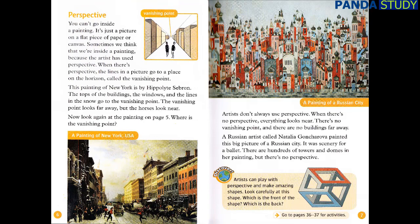Perspective. You can't go inside a painting. It's just a picture on a flat piece of paper or canvas. Sometimes, we think that we're inside a painting, because the artist has used perspective. When there is perspective, the lines in a picture go to a place on the horizon, called the vanishing point. This painting of New York is by Ippolit Sebron. The tops of the buildings, the windows, and the lines in the snow go to the vanishing point.